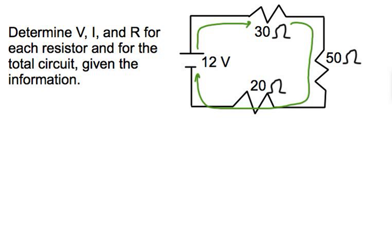Start off by labeling your resistors. We're going to call this resistor 1, this resistor 2, and this resistor 3. It doesn't really matter. So we've got R1, R2, and R3.